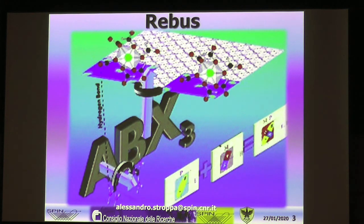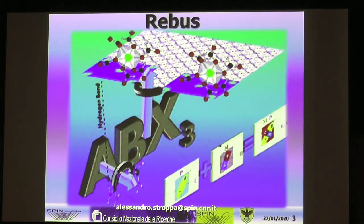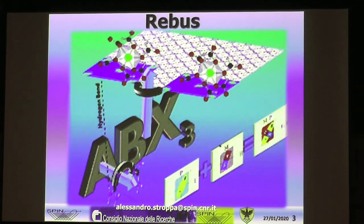We will discuss an interesting example: a copper-based hybrid perovskite with quite interesting properties. At the end of the talk we should be able to understand this figure — we have the chemical formula ABX₃, then two arrows representing two kinds of rotations linked by hydrogen bonding, and a pictorial equation that we would like to solve.